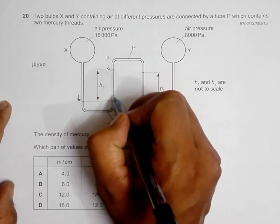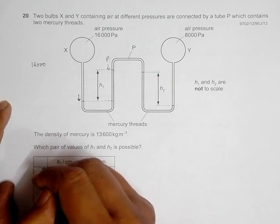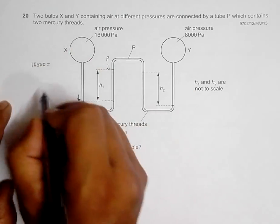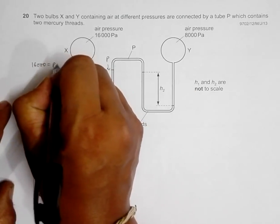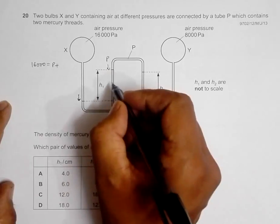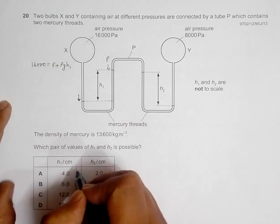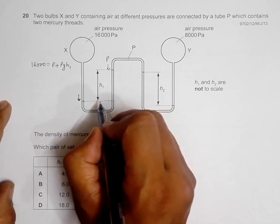Plus the pressure due to this column of mercury, so it should be equal to - the pressure here should be equal to P plus ρgh1.